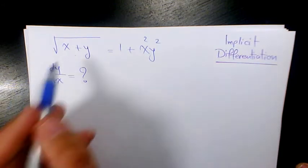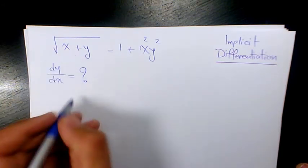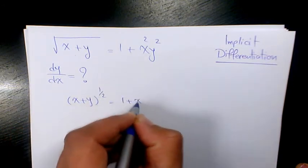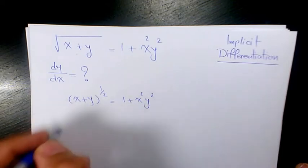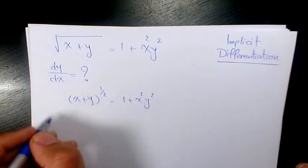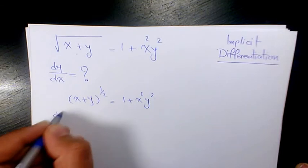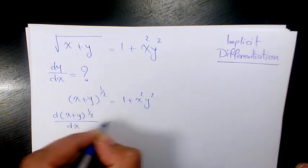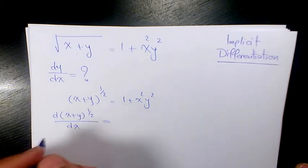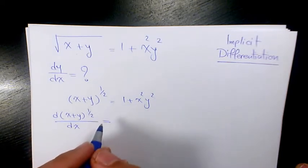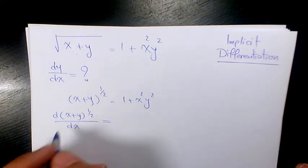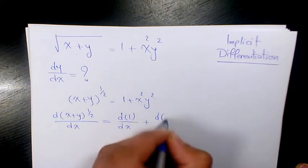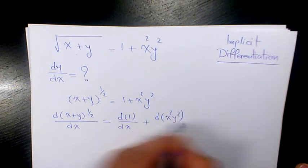The first thing I'm going to do is change this square root to power 1 over 2. Then I find the derivative — it's going to be the derivative of x plus y to the power 1 over 2 with respect to x, equals the derivative of 1 with respect to x, plus the derivative of x squared y squared with respect to x.